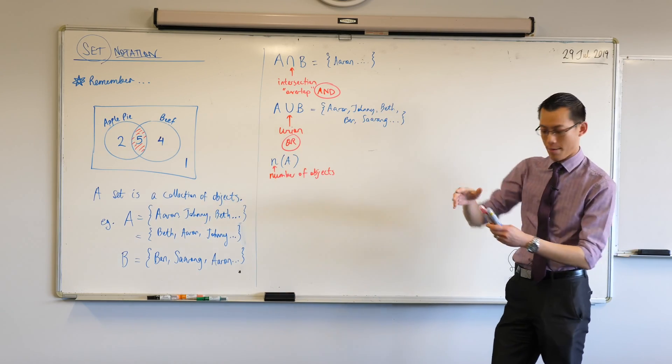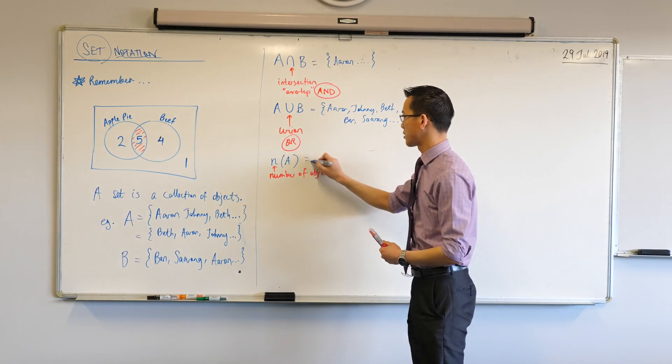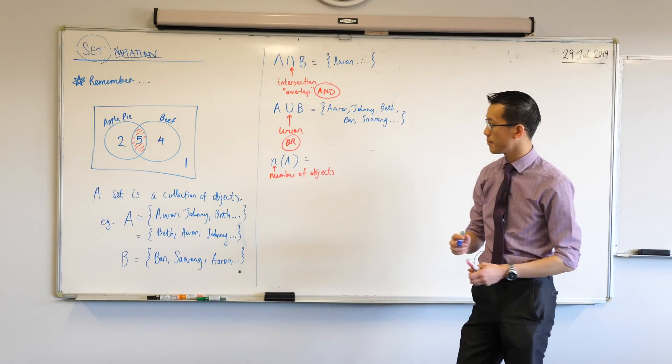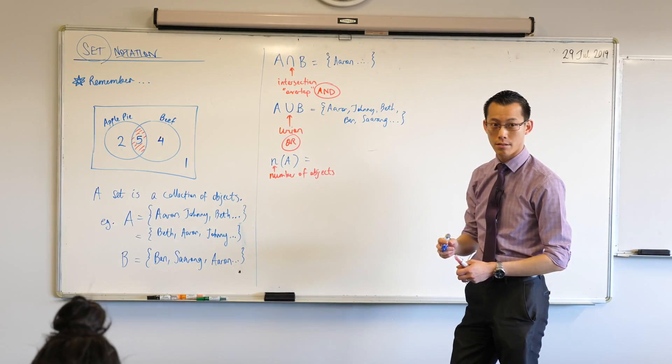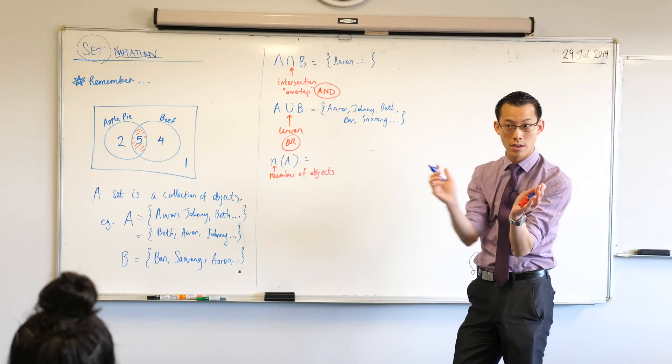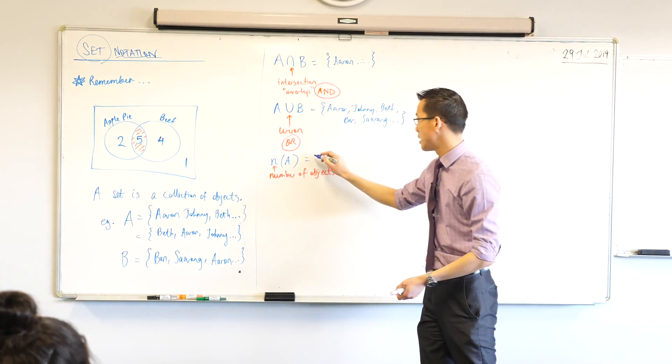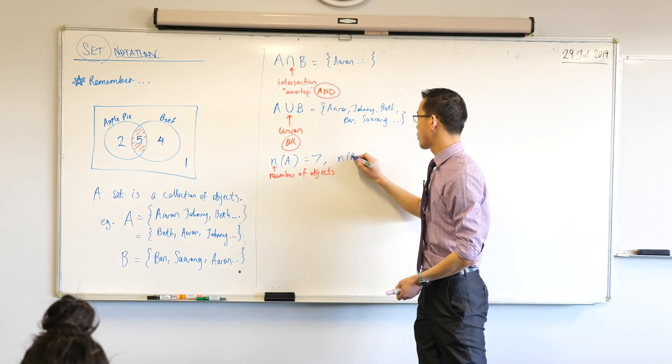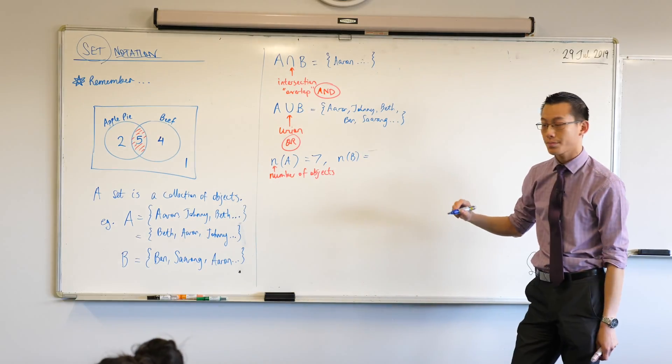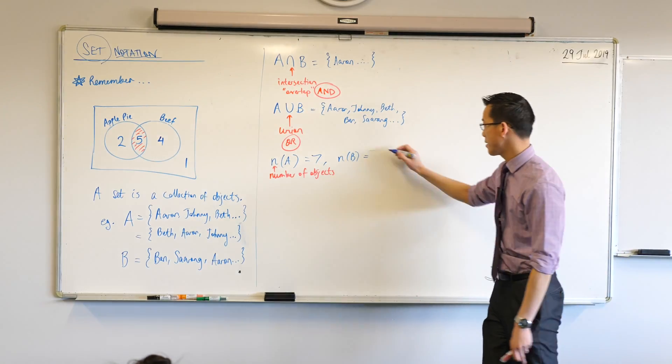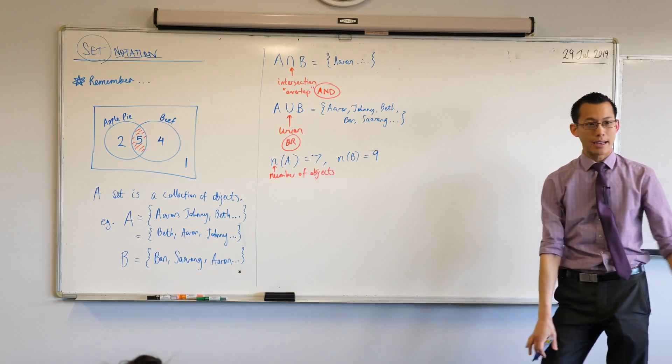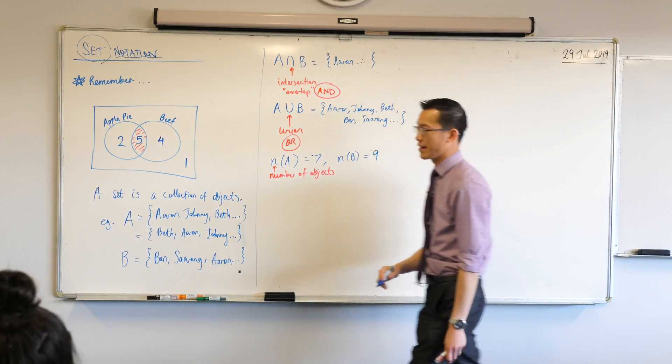In this particular example with my apple pie and beef, what is the number of objects in set A? It's inclusive of everyone inside the circle, right? So there's the two and there's the? Five. So what's my total? Seven. Seven. And you can say, just in the same way, that n(B) equals? Very good.